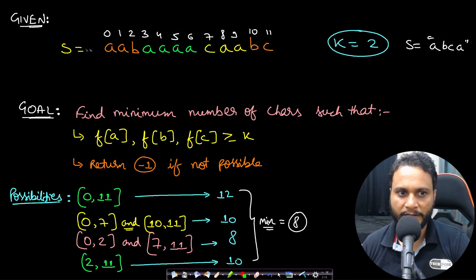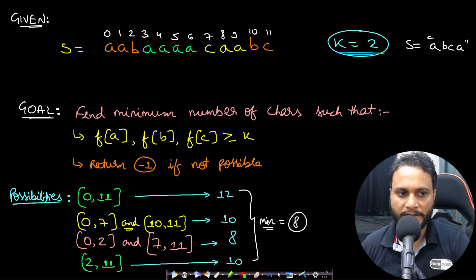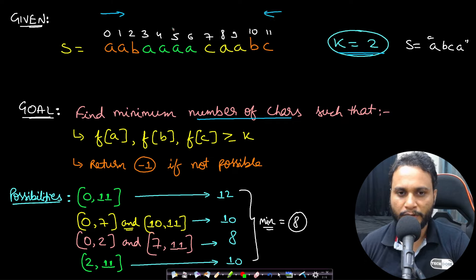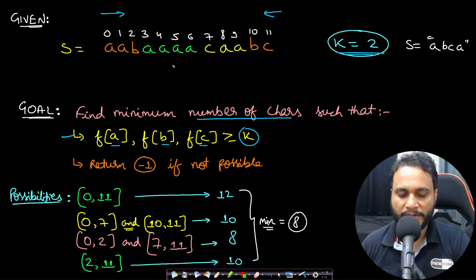Let's take an example for better understanding. Say our given string is of length 12 with k equals 2. Our goal is to find the minimum number of characters to include — taken only from the left side or the right side, not randomly from the middle — such that the frequency of a, b, and c are all greater than or equal to k.